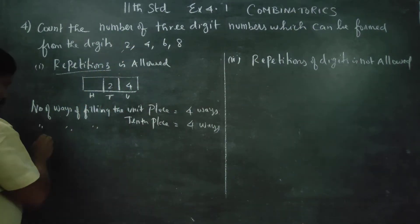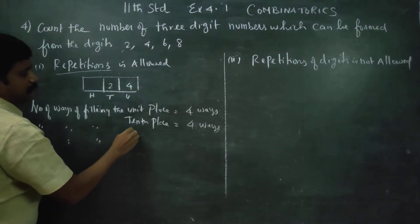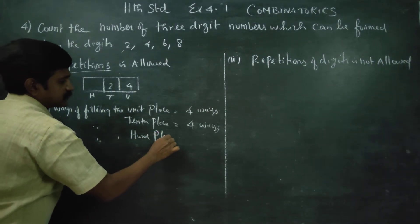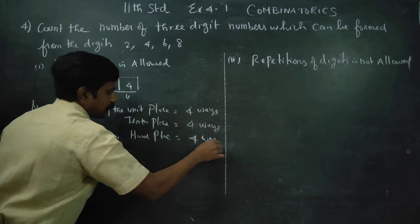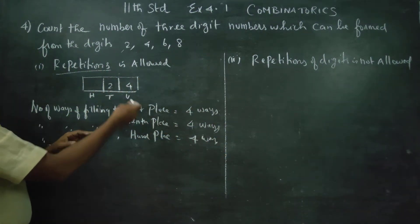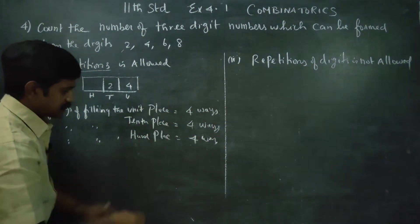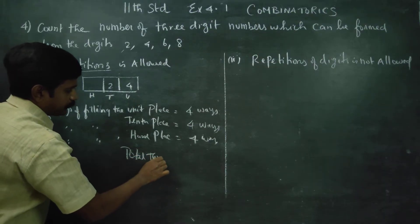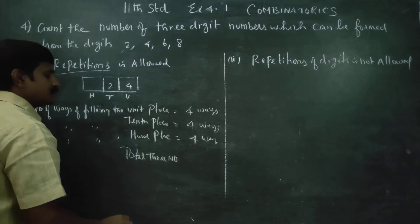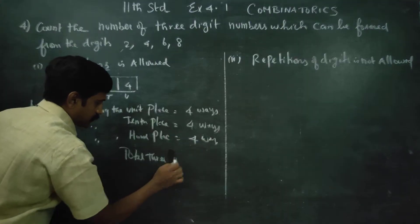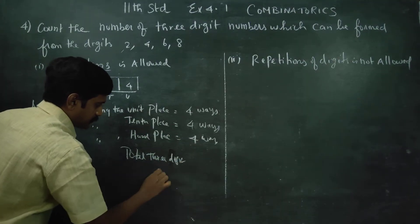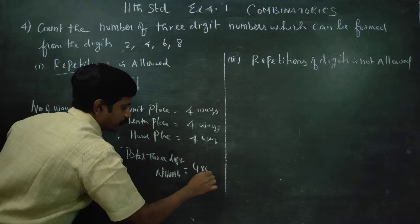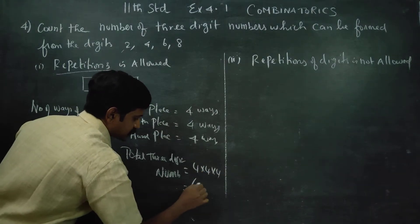The number of ways of filling the hundreds place is also 4 ways. So the total number of 3-digit numbers is equal to 4 × 4 × 4, which equals 64.